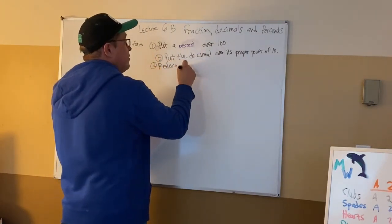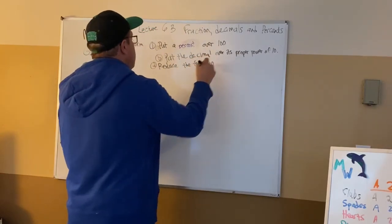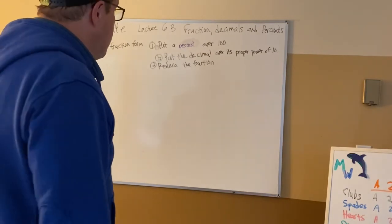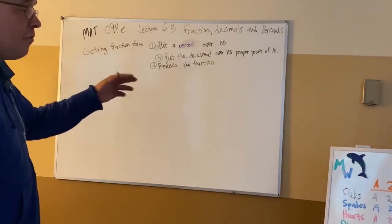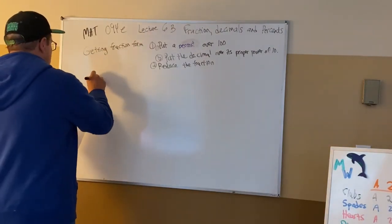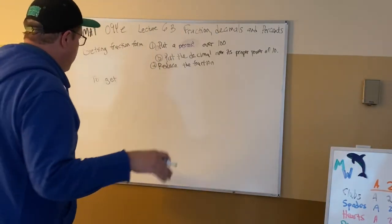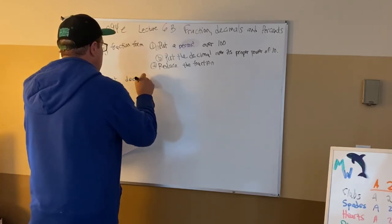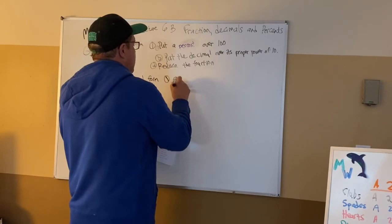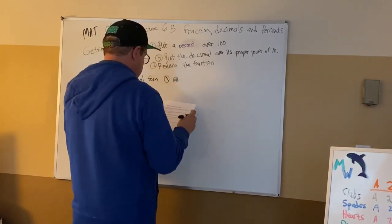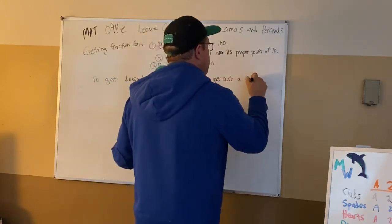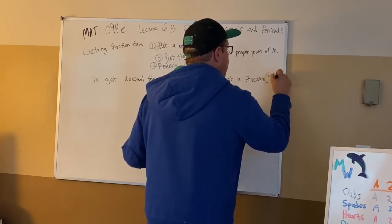Reducing the fraction is not something a lot of people love, but you'll make a fraction and your job is to reduce it. If you start with the decimal, put it over a hundred. You might have to multiply top and bottom by a power of ten to get the decimals out of the top. On the bottom, put the decimal over its proper power of ten — put it over one and multiply by powers of ten so that you don't have decimals sitting inside the fraction. To get decimal form: make the percent a fraction over one hundred.